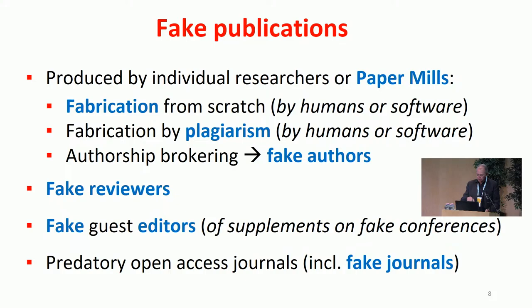Third and last problem: the replication crisis. It's been in the air for a little more than ten years. Nature, 2012: animal research in oncology — a little more than 10% was reproducible. That means when you redo a study in the exact same way, you get only 10% of the same findings. That was shocking.